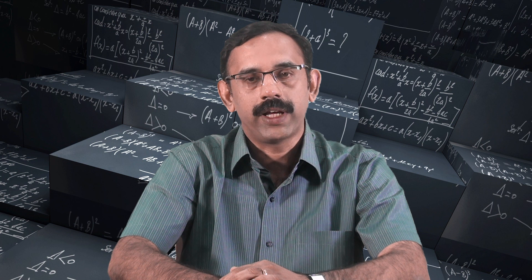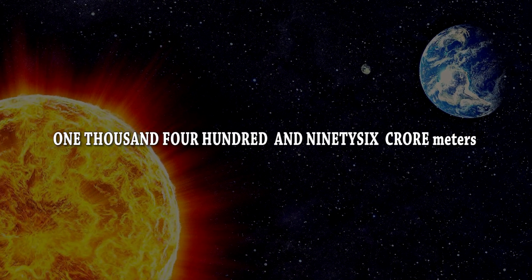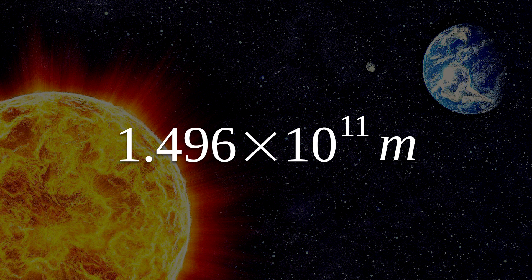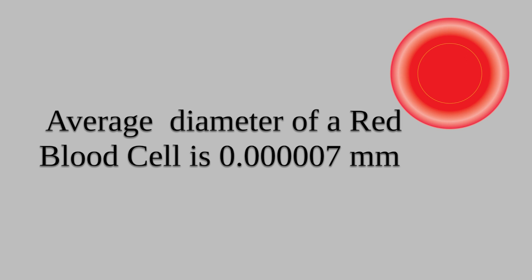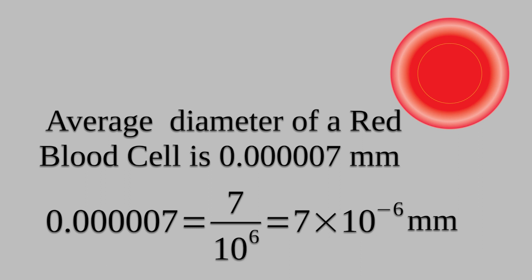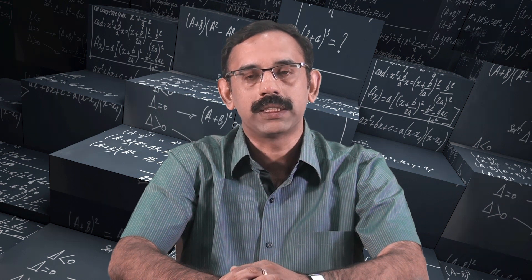Now let us see a few applications of exponents. The distance from the Earth to the Sun is 1496 crore meters. It can be written in standard form as 1.496 times 10 raised to 11 meters. Similarly, we can write very small numbers in standard form. For example, the average diameter of a red blood cell is 0.0000007 mm, which is 7 divided by 10 raised to 6, equal to 7 times 10 raised to minus 6 mm. Thus, we can use exponents to express very small as well as very large numbers in standard form.